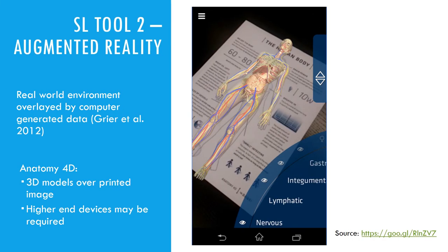Augmented reality overlays digital information over a real-world view. Anatomy 4D puts interactive models on top of printed images and is an engaging way to learn in laboratory environments alongside real samples. Seeing the models expands our understanding of theoretical structures and concepts, but requires high affordance mobile devices.